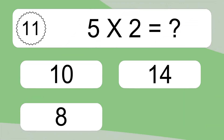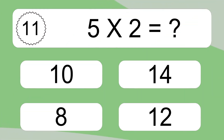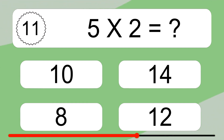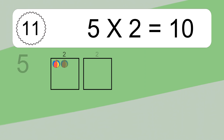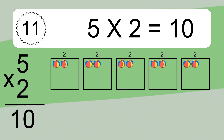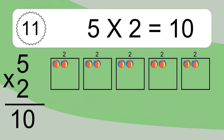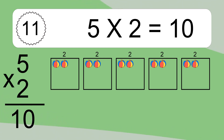5 times 2 equals what? 5 times 2 equals 10. We have 5 boxes, and each box has 2 colorful balls inside. If you count all the balls in all the boxes together, you will have 5 times 2 balls. This equals 10 balls.